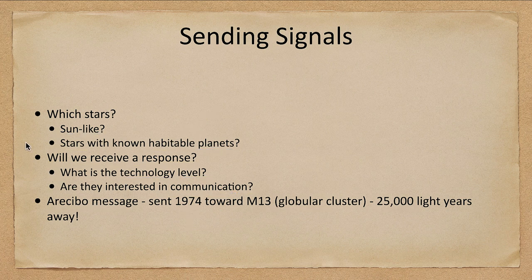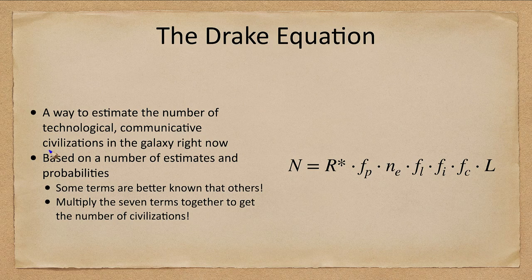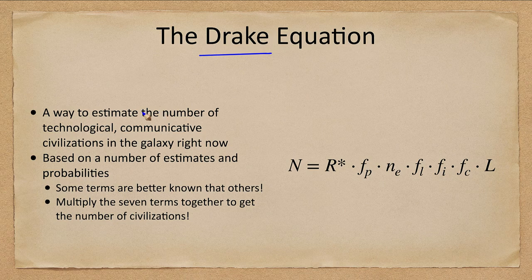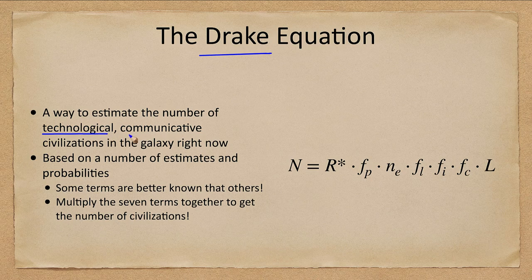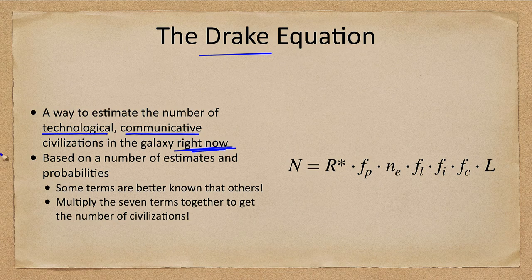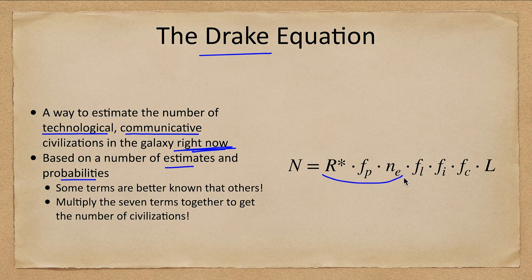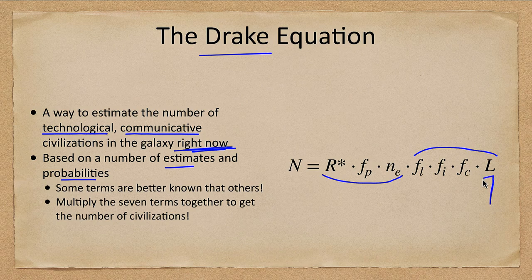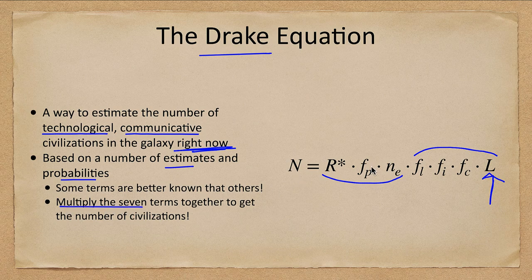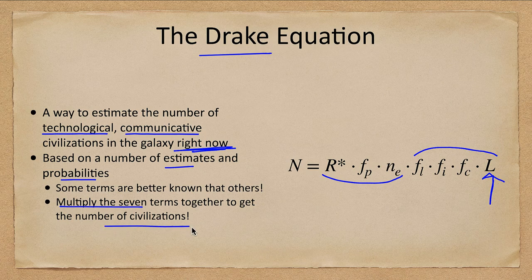So how can we try to understand how many civilizations there are in the galaxy? Well, what we use is the Drake equation. The Drake equation is a way to estimate a specific thing. It's the number of technological communicative civilizations in the galaxy right now. How many are there now that we could communicate with? It's based on a number of estimates and probabilities. So we can estimate some of the numbers which are astronomical. We have to get some probabilities for some of the others. And some of them like this last one is going to be very difficult to find. But if we can determine these seven terms, all we have to do is multiply them all together to get the number of civilizations.